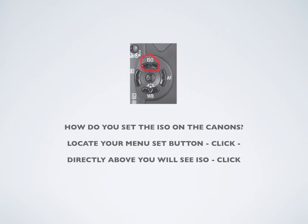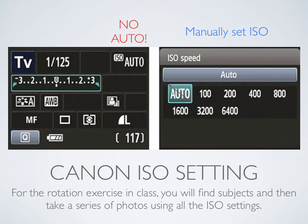So how do you go about setting your ISO on the Canons? It's fairly easy. You will locate the menu set button on your Canon and click it. Right above where it says menu set, you will see the word ISO with a button. Click the ISO and up will come your setting where you can manually set your ISO. As you'll see on the left of your screen — no auto, no ISO auto. You must learn to manually set your ISO on the camera.